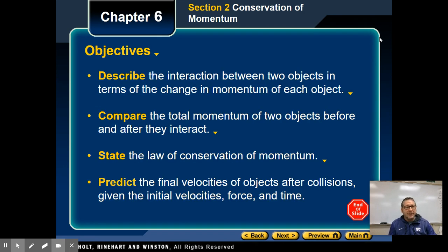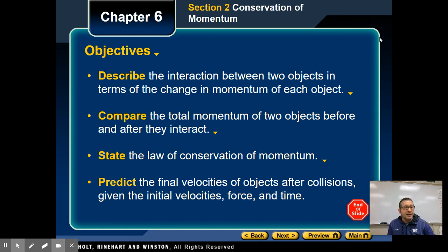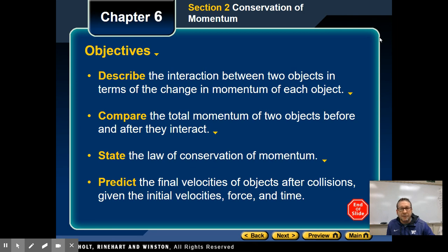The objectives of this section: we are going to describe the interaction between two objects in terms of the change in momentum of each object, compare the total momentum of two objects before and after they interact, state the law of conservation of momentum, and predict the final velocities of objects after collisions given the initial velocities, force, and time — or any other portion of the new formula that we can solve for.